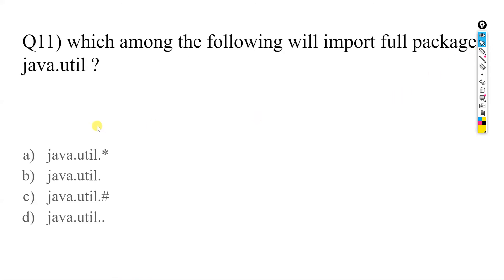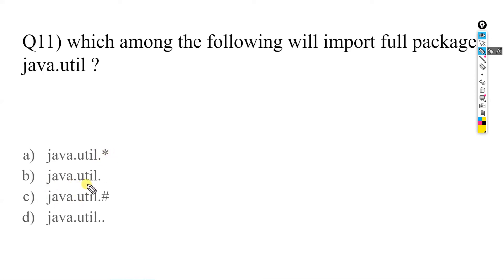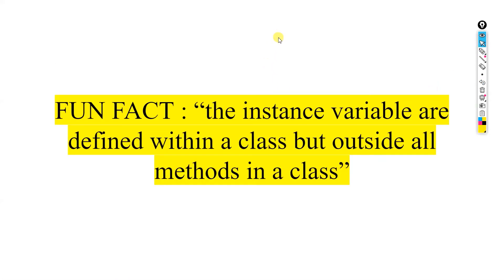Which import statement will import the full java.util package? The options include java.util.java, java.util dot something, java.util.hash, and java.util.*. The answer is A — whenever we want to import a full package, we write the package name followed by a dot and an asterisk, for example: import java.util.*.